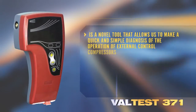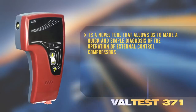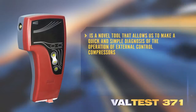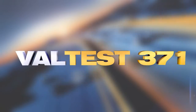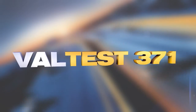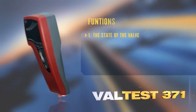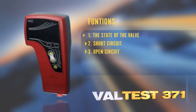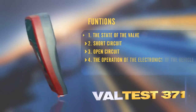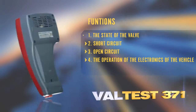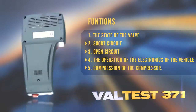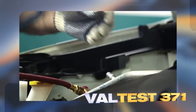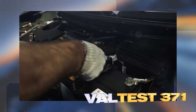Val Test 371 is a novel tool that allows us to make a quick and simple diagnosis of the operation of external control compressors. It is used to determine the state of the valve — whether the coil is in short circuit or open circuit — the operation of the vehicle electronics, and the compression of the compressor. Val Test was designed to be easily used by technicians who regularly work with air conditioning systems of vehicles.